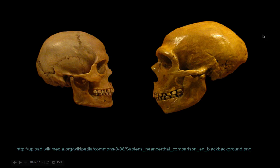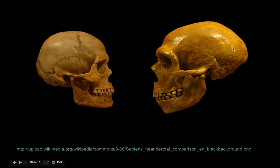This image shows a Neanderthal skull and a human skull. You will see that the Neanderthal also has a large jaw by comparison to the human jaw. This is an adaptation, because we have a much more developed frontal cortex.